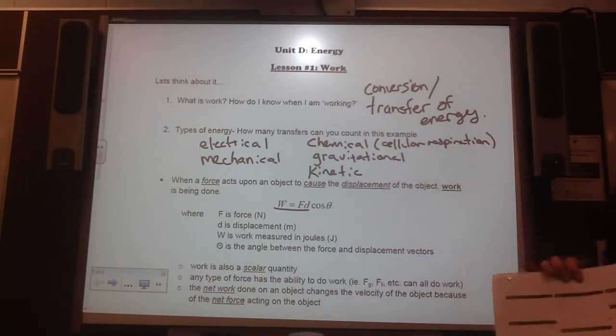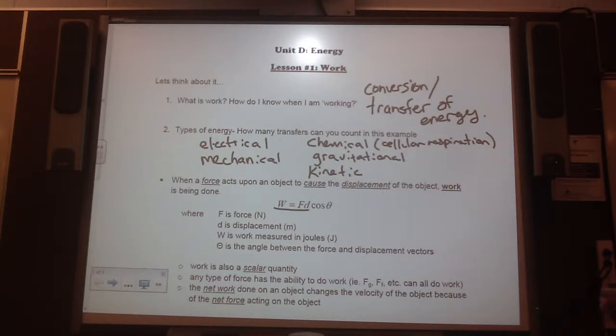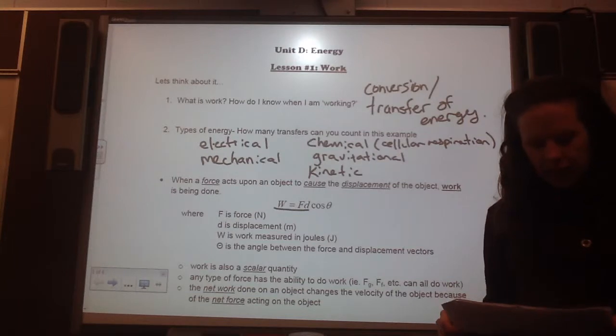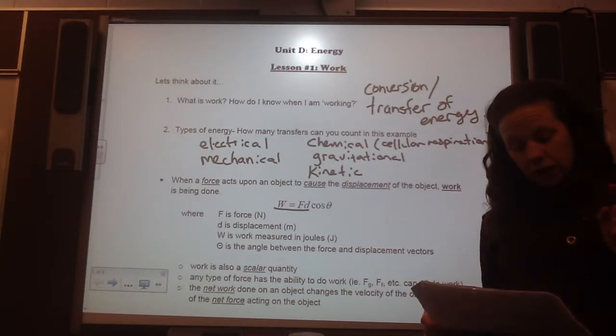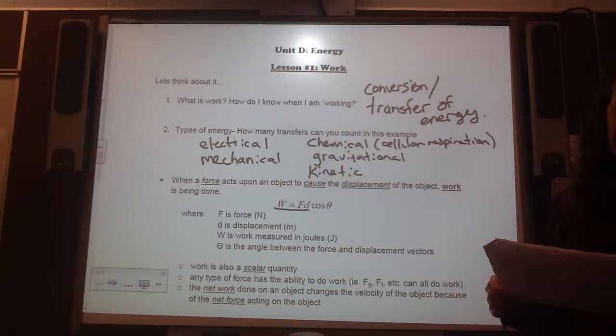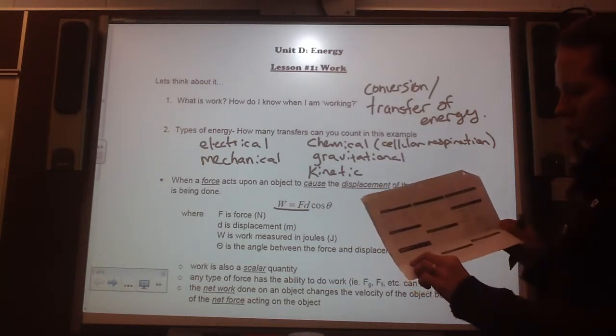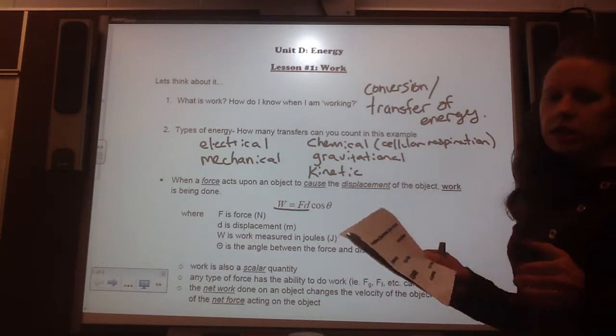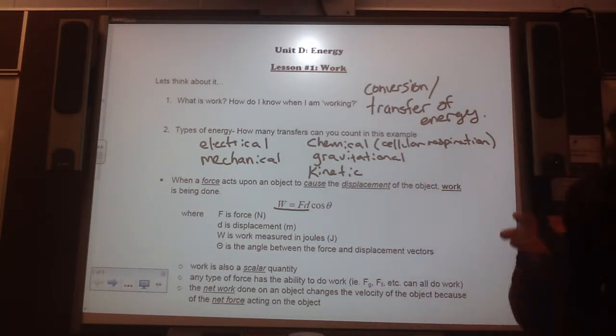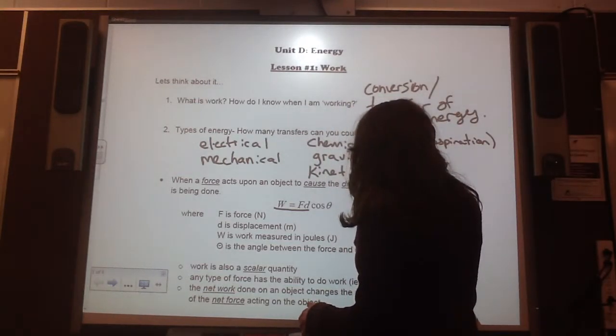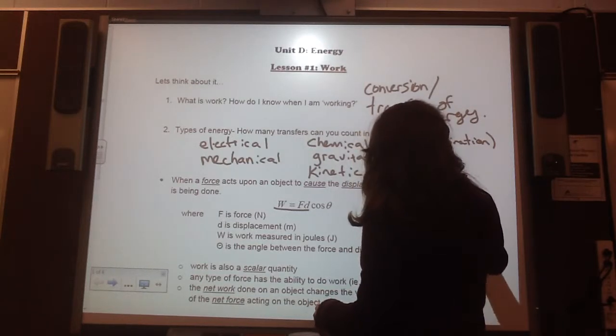Now, take out your formula sheets. So we've done all of kinematics. We've done dynamics. Well, we have one thing left in dynamics. But underneath, now we're in momentum and energy. So you should be able to find this one. Work is equal to force times distance times cos theta. Now, both force and distance are in your bar lines, right? So work equals force times distance times cos theta.